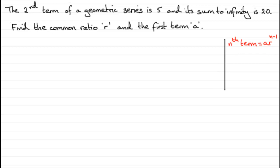So that means that we can start off with this first fact here that the second term of a geometric series is 5. So using this formula we know that a times r to the power n minus 1. Well n would be 2 so 2 minus 1 is 1. So I've got ar to the power 1 or just simply ar is going to equal 5.